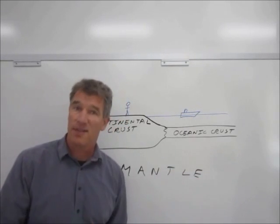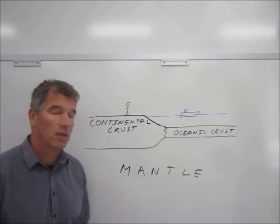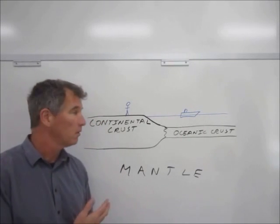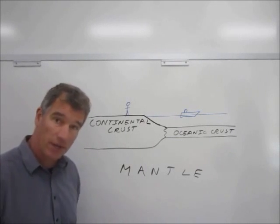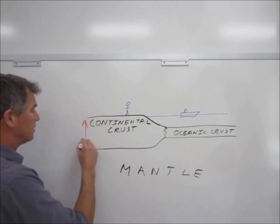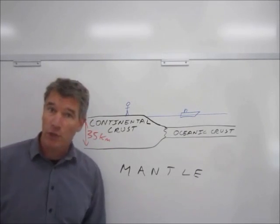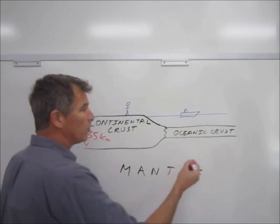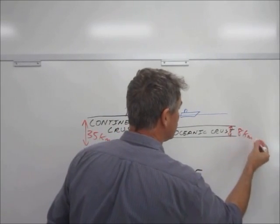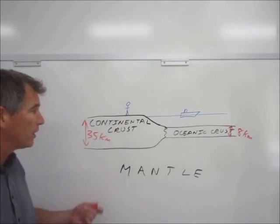The mantle extends down to about halfway down to the center of the Earth. You can see on my sketch that there's one very clear difference between the continental crust and the oceanic crust: the continental crust is a lot thicker. It averages about 35 kilometers in thickness, which is about 22 miles, whereas the oceanic crust averages only about 8 kilometers in thickness, which is about 5 miles. So there's a big difference in thickness.